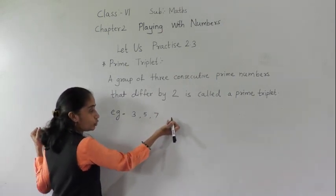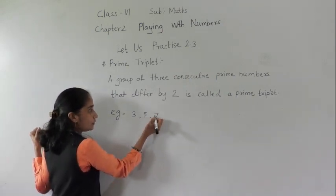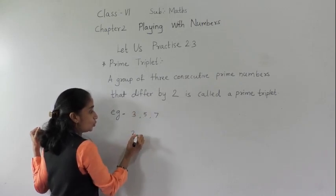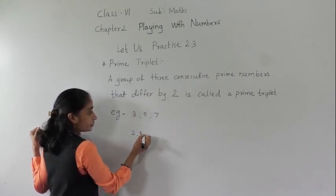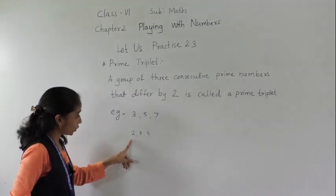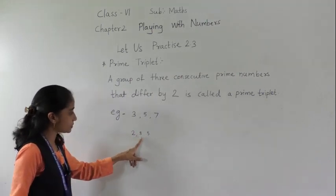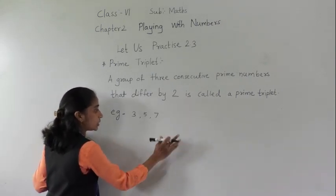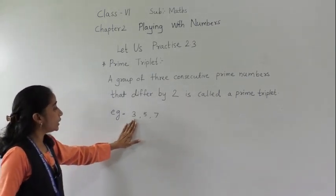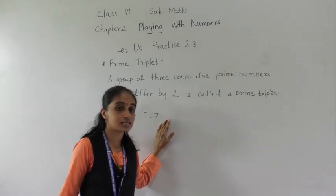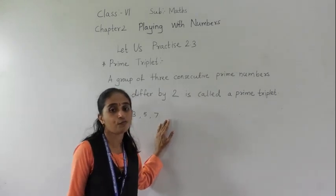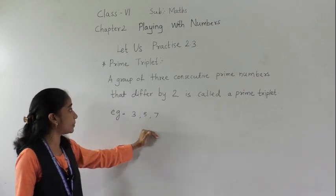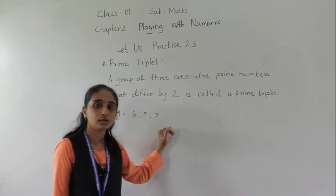Three, five and seven are consecutive prime numbers. If you take two, three and five, the difference between two and three is one, so those numbers are not called a prime triplet. Three, five and seven is the example of a prime triplet because these are consecutive prime numbers that differ by two.